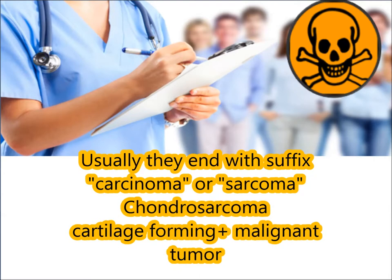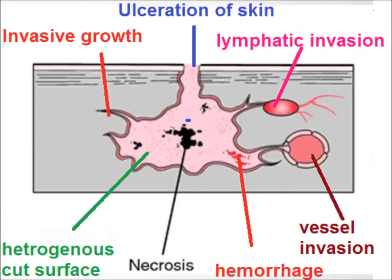Chondrosarcoma is a cartilage-forming mesenchymal tumor, whereas carcinoma is an epithelial malignant tumor. Malignant tumors generally have infiltrative or invasive growth patterns, so they may cause ulceration of the overlying skin. Their cut surface is heterogeneous because of necrosis and hemorrhage, and they cause lymphatic and vascular invasion.